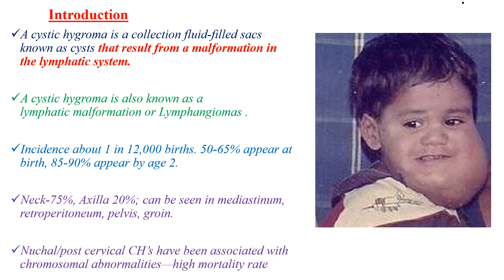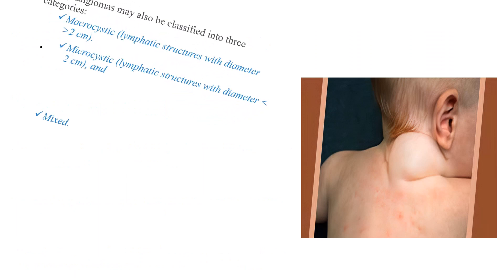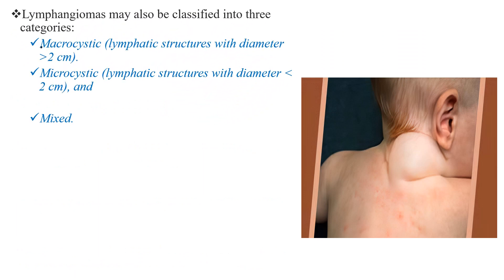Nuchal or posterior cervical cystic hygromas have been associated with chromosomal abnormalities, and they carry a high mortality rate. Cystic hygroma or lymphangioma may also be classified into categories: macrocystic, which refers to lymphatic structures with a diameter more than 2 cm; microcystic, with diameter less than 2 cm; and mixed.